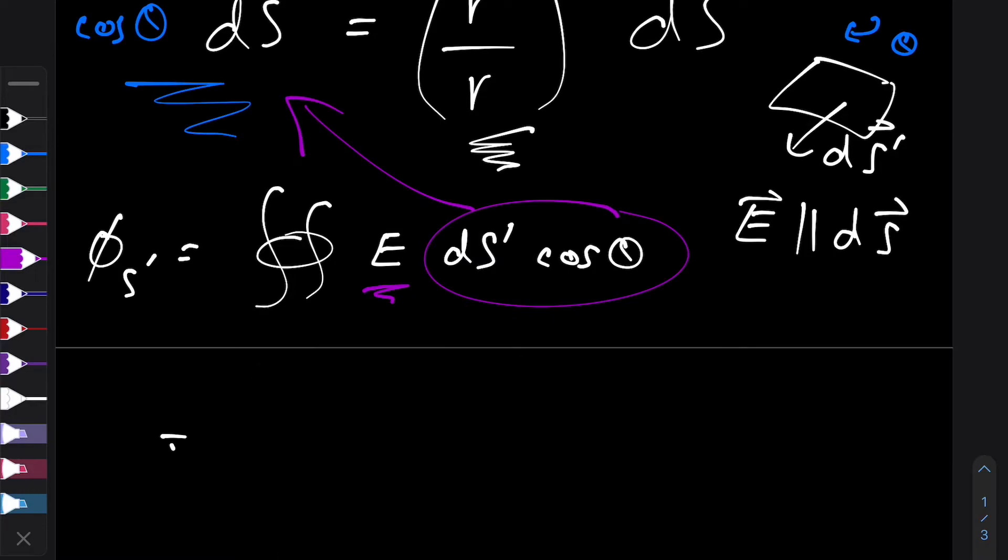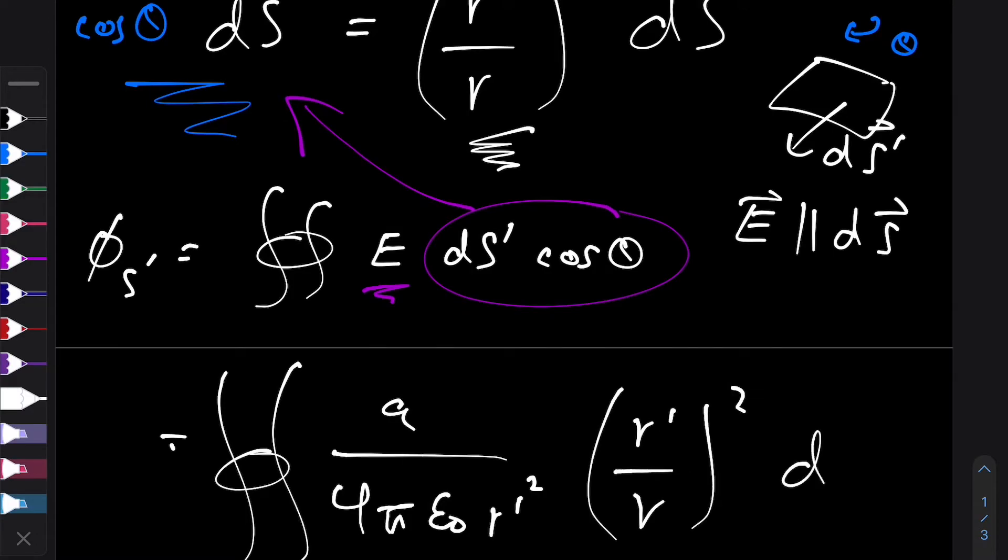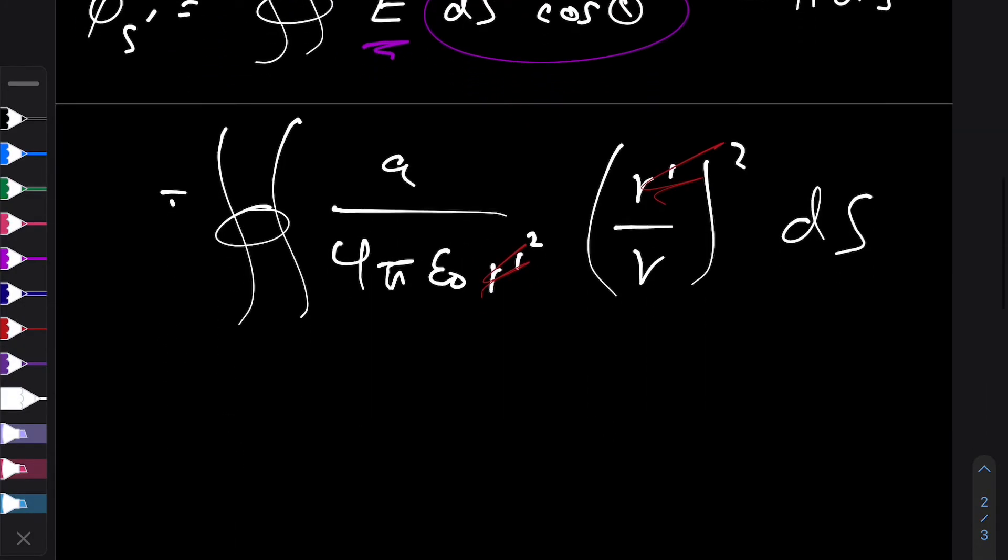wrong color, we get the closed loop integral of, so that's q over 4π ε₀ r dash squared, r dash because we're integrating over the bigger surface, and this side of the equation is now r dash over r squared ds. Things start to cancel out again, that and that, and what we're left with is the closed integral of q over 4π ε₀ r² ds.